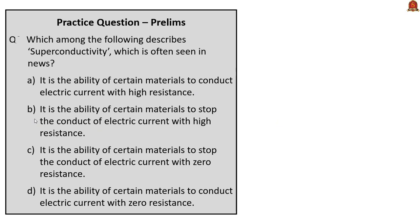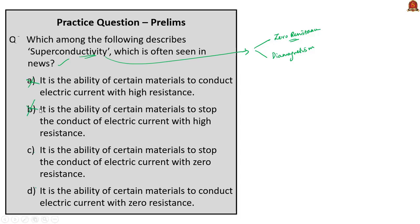Which among the following describes superconductivity? Superconductivity has two main characteristics: zero resistance and diamagnetism. The answer should contain zero resistance, which narrows it to options C and D. Between C and D, one says it conducts electricity and the other says it stops conducting electricity. Since superconductivity means conducting electricity, we eliminate the option that says it does not conduct. The correct answer is option D: it is the ability of certain materials to conduct electric current with zero resistance.